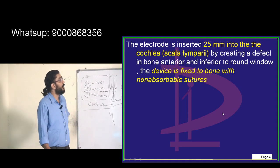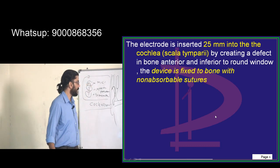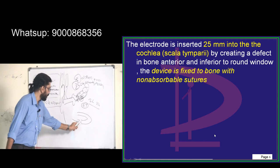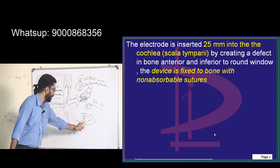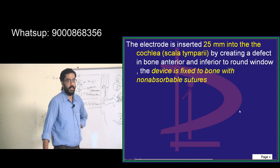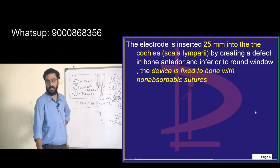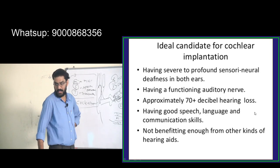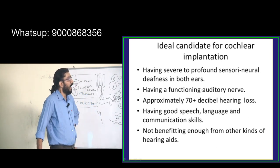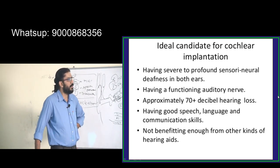The electrode is inserted 25 millimeters into the cochlea's scala tympani — that is the third compartment: scala vestibuli, scala media, scala tympani. The device is fixed to the bone with non-absorbable sutures. The external device can be removed and reattached via a magnet. The ideal candidate for cochlear implant should be identified as early as possible for best results.